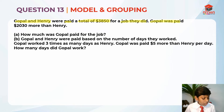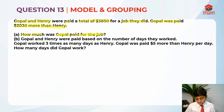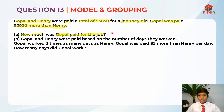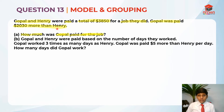Gopal was paid — this whole line is really important. We are going to use the model method. We are supposed to draw a comparison model because Gopal had $2,030 more than Henry. So we are going to use the comparison model.